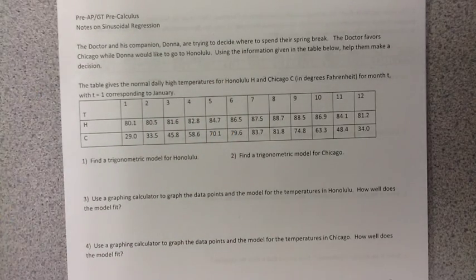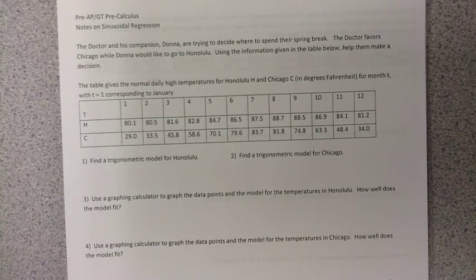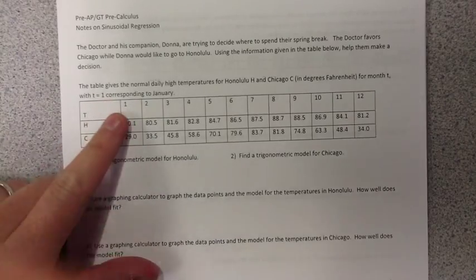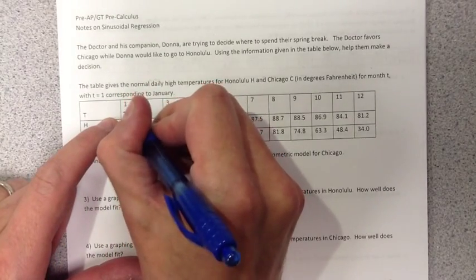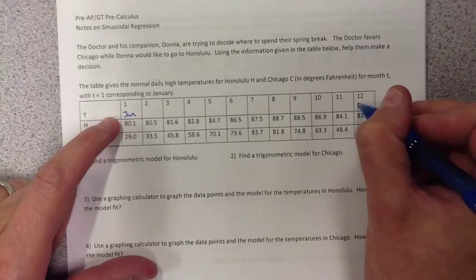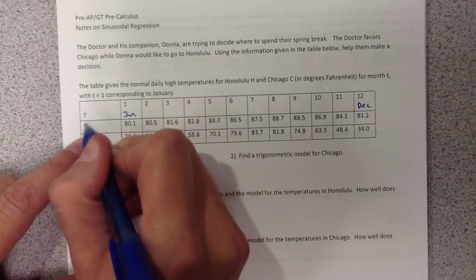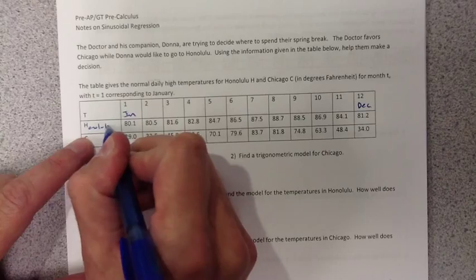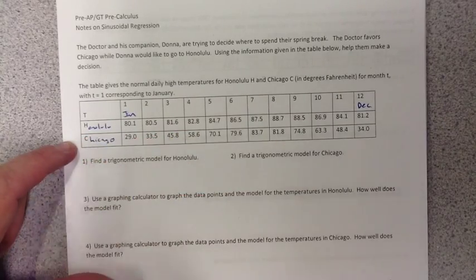In this problem right here, the doctor and his companion Donna are trying to decide where to spend spring break. The doctor is favoring Chicago, while Donna would love to go to Honolulu. Using the information given in the table below, help them to make a decision. We've got the normal daily high temperatures for each month of the year, given January on the first month all the way through December. H is for Honolulu, and Chicago.